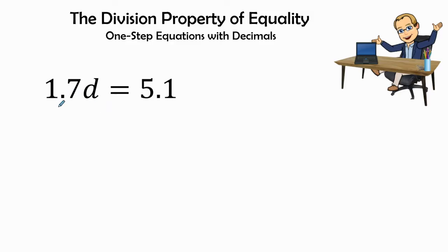Here I have 1.7d equals 5.1. Now I notice that this 1.7, that is our coefficient, and it's going to be multiplied by our variable.